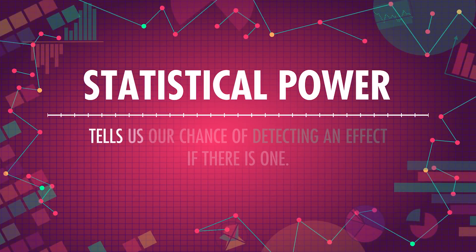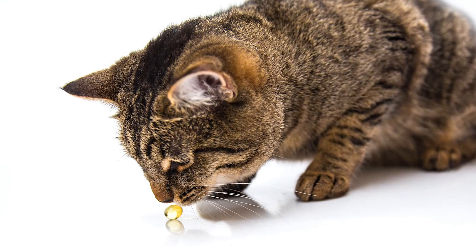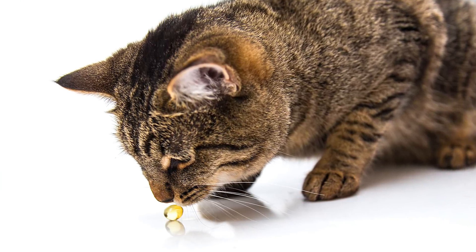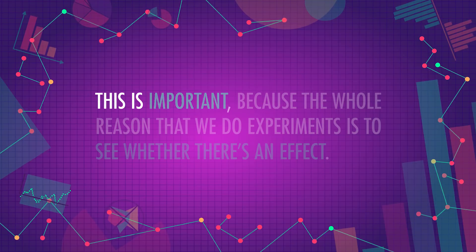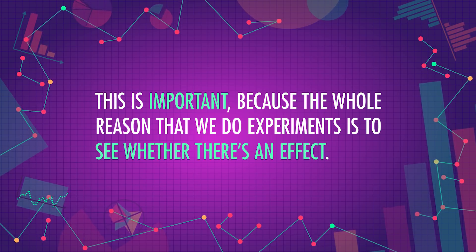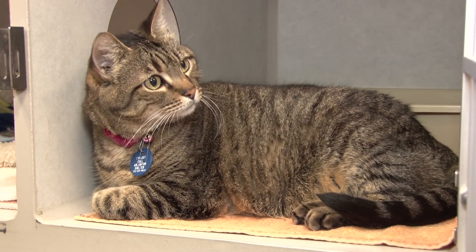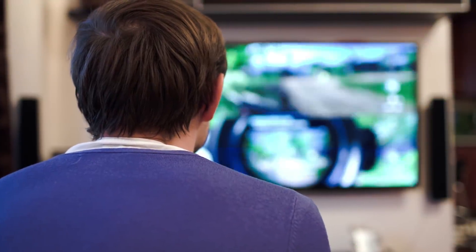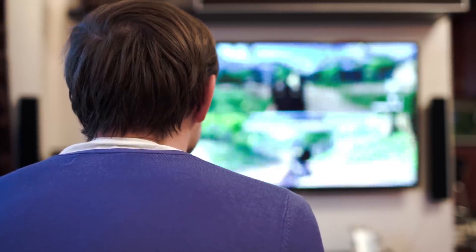Statistical power tells us our chance of detecting an effect if there is one. Imagine we design a study to look at whether fish oil makes cats' hair shinier, and it has an 80% statistical power. That means we know that if there really is an effect of a certain type of fish oil, and if we ran the same experiment multiple times with different samples of cats, the data from 80% of the experiments will lead us to make the correct decision and reject the null hypothesis that fish oil has no effect. This is important because the whole reason we do experiments is to see whether there's an effect — we want shinier cats. Statistical power tells us about our ability to detect these effects if they exist. It would be a waste of time and money to run an experiment on whether people who play video games have quicker reaction times if we only have an estimated 20% power, because even if gameplay affects reaction time, we often wouldn't be able to tell.